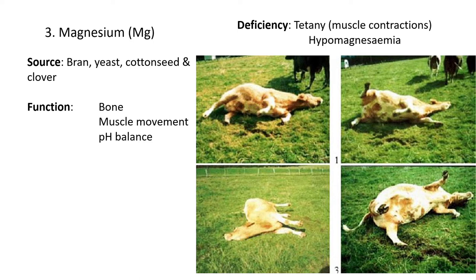Some functions of magnesium are good bone health and good muscle movement. Without magnesium, you can't actually move your muscles. Thirdly, it helps maintain a good pH balance in the body. With a deficiency, as shown in the pictures of the cow lying on its side and spasming, what's happening is called tetany — when the animal experiences muscle contractions. They struggle to move their muscles and have almost no control over them because they can't use their nervous system. No magnesium means no muscle movement, so the cow won't be able to stand up until it has absorbed or eaten magnesium.